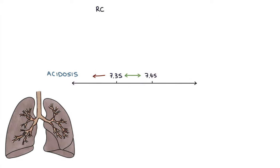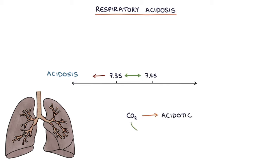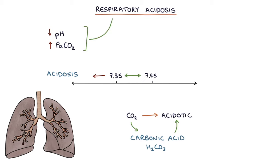Let's talk about respiratory acidosis. Carbon dioxide (CO2) makes blood acidotic by breaking down into carbonic acid (H2CO3). A low pH with a raised PaCO2 — meaning lots of carbon dioxide dissolved in the blood — indicates a respiratory acidosis. This suggests the patient is acutely retaining carbon dioxide and is unable to excrete it, which is what has turned their blood acidotic.